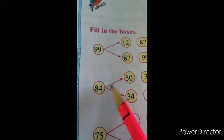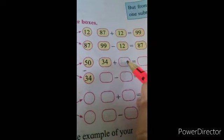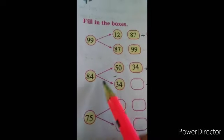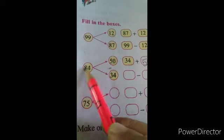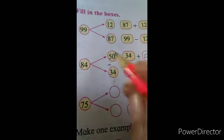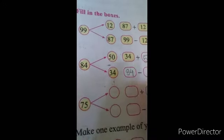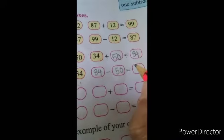See the second example: the numbers given are 84, 50, and 34. We have to make an addition example and subtraction examples. So: 34 plus 50, the answer is 84. For subtraction, take the bigger number, 84. First: 84 minus 50, the answer is the remaining number, 34.